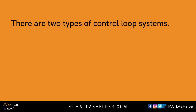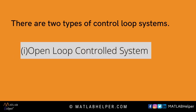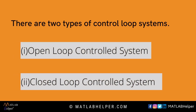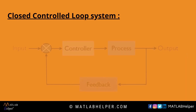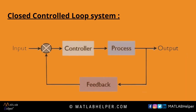Now let's study the types of control loop systems. There are two types: first, an open control loop system; and second, a closed control loop system. An open loop system is a non-feedback system — a type of continuous control system in which the output has no effect on the control action of the input signal. A closed loop control system is an electronic device that automatically regulates a system to maintain a desired state or set point without human interaction. It uses a feedback system or sensor.